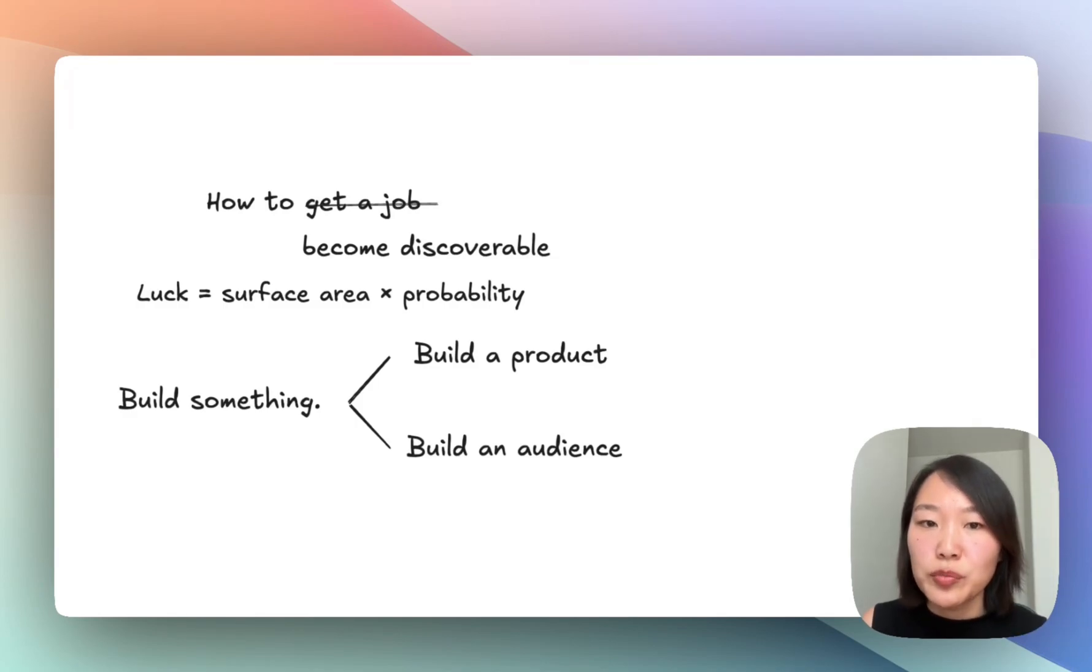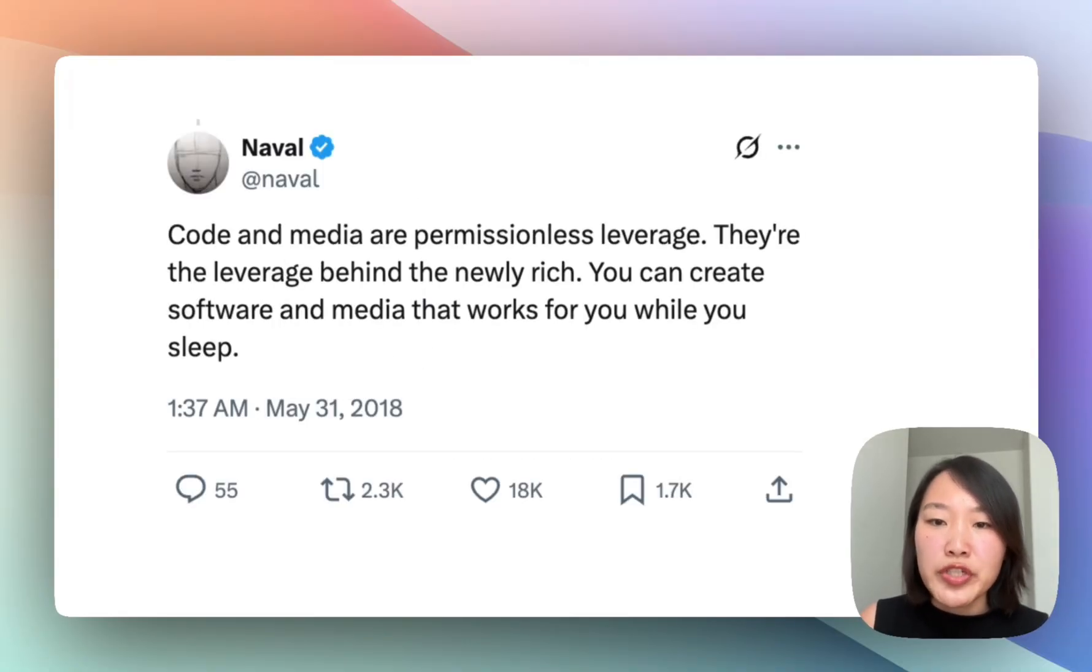Luck is mathematics. Luck equals surface area times probability, so we should work on increasing our luck surface area. To become discoverable, you need to show, not tell. You need to build something. You have two options: either you build a product or you build an audience. These two correspond nicely with what Naval Ravikant said. He said code and media are permissionless leverage, so don't wait for other people to give you permission. You don't need anyone's permission in order to build your product or your own audience online, and AI has made both of these a lot more accessible.